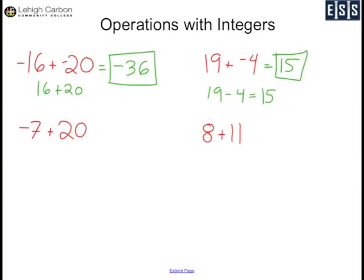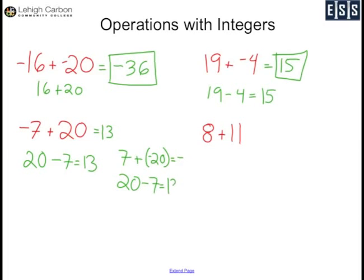Next we have negative 7 plus 20. Again, my signs are different. 20 is my bigger number, so my answer is going to be positive. 20 minus 7 is 13, so the answer is 13. If instead I had 7 plus negative 20, the bigger number is still 20 but it's negative, so the answer would be negative 13.